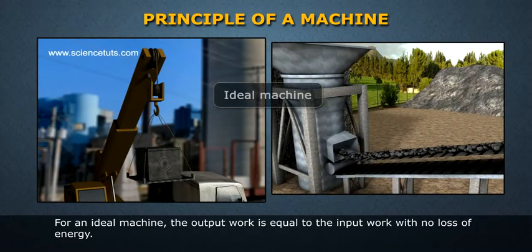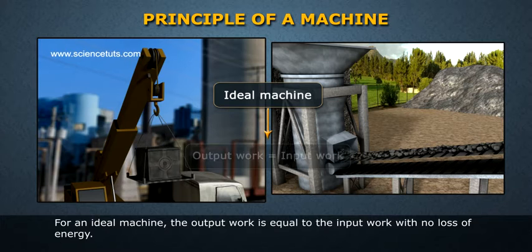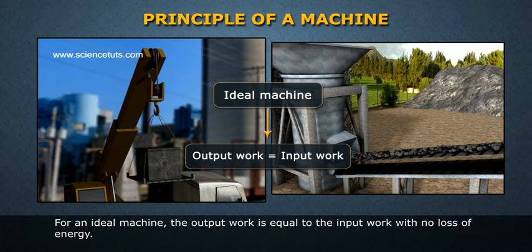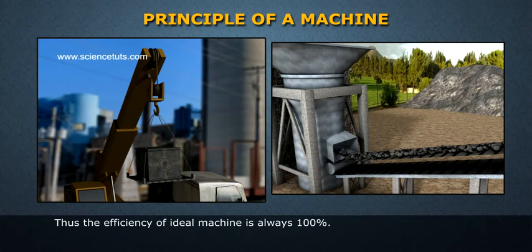For an ideal machine, the output work is equal to the input work with no loss of energy. Thus, the efficiency of an ideal machine is always 100%.